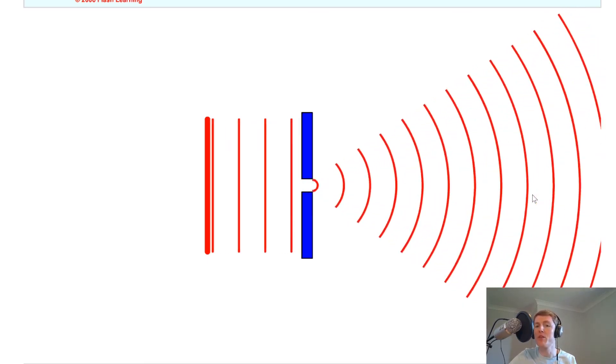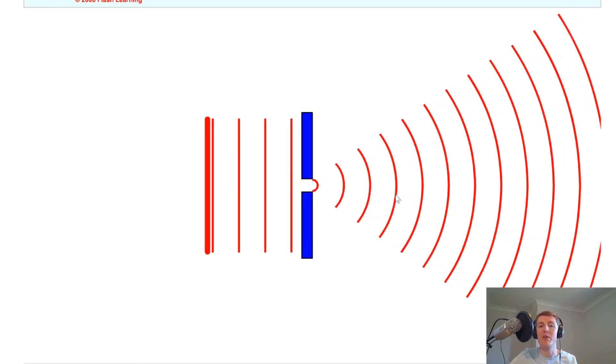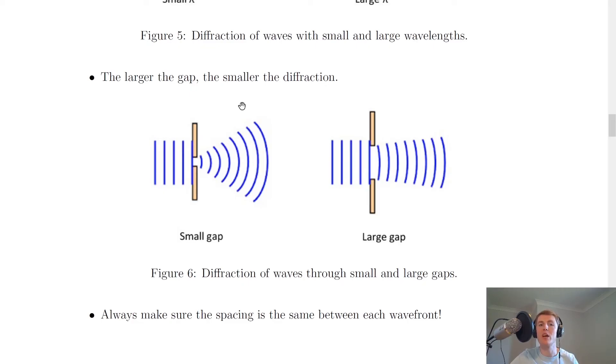And that tells us that smaller gaps produce more diffraction. So smaller gaps produce more diffraction, wider gaps produce less diffraction. And that is another general rule that we're going to have to remember. So going back to the notes now, you'll see the second rule, which is that the larger the gap, the smaller the diffraction. And we just saw that.